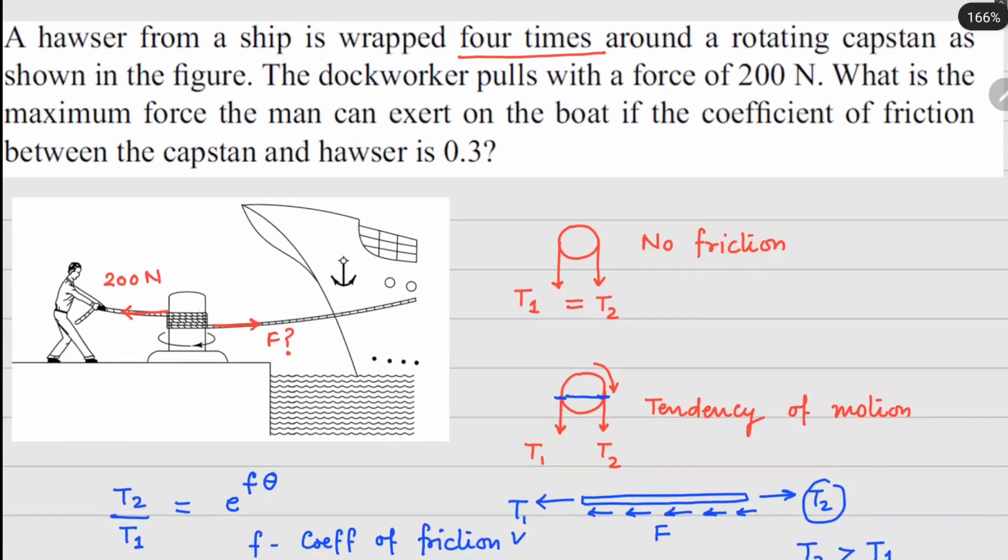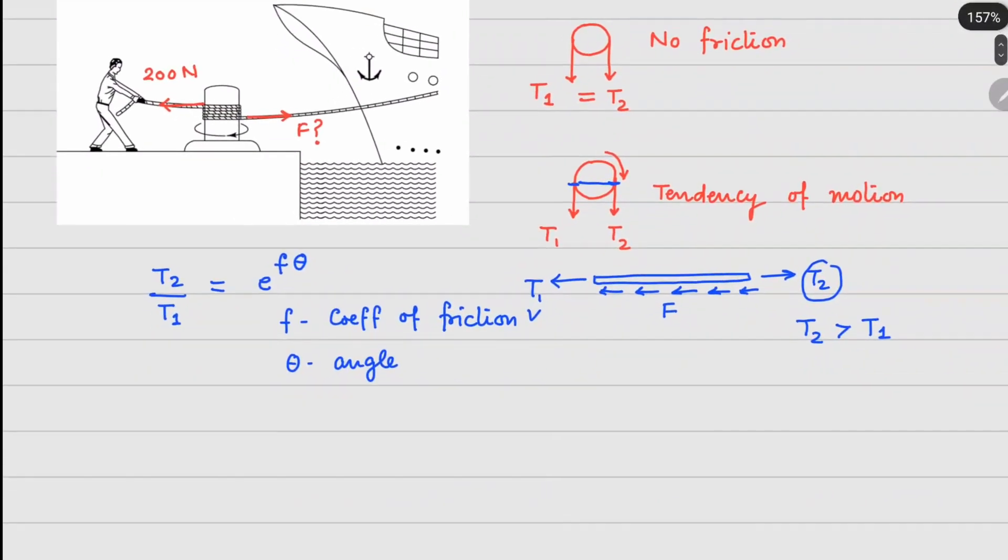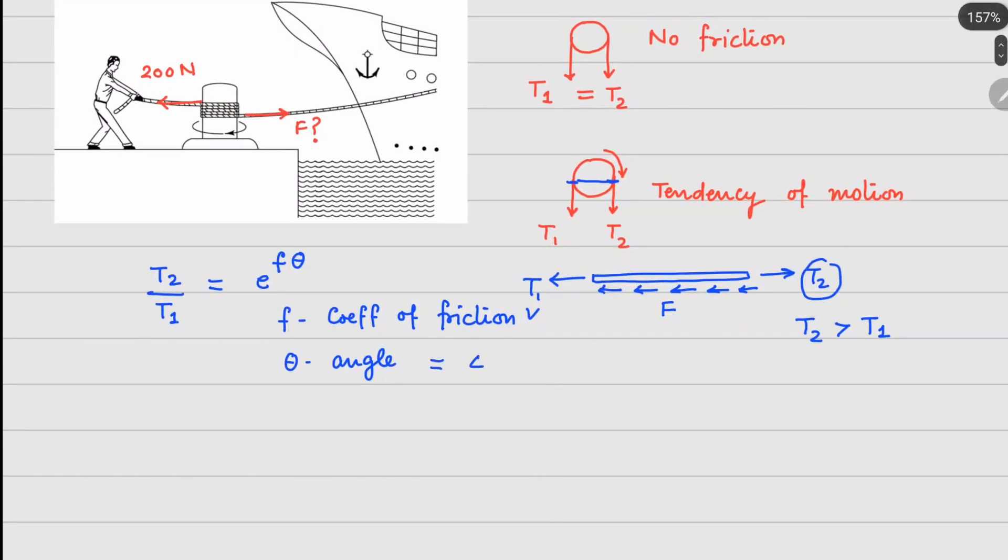So now if you look at your current problem, how much angle do we have? Because the rope is wrapped around 4 times. So in one circle the angle is 2π. So your angle in this case becomes 4 times 2π, and your coefficient of friction given in this problem is 0.3.